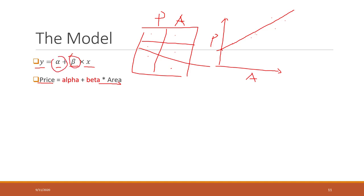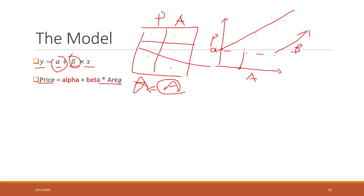Alpha is the value of the intercept and beta is the slope of this straight line. Once you have alpha and also beta, you will have this line. If I say I have a house and we know the area and want to predict the price, you just bring that area value to the model and you can find the corresponding predicted price.